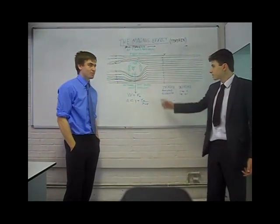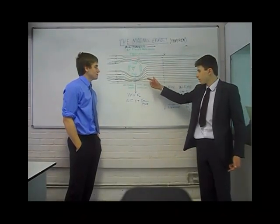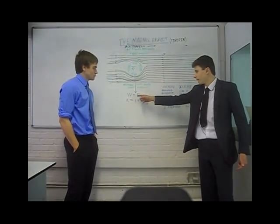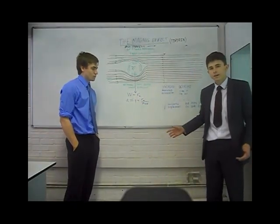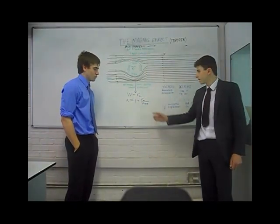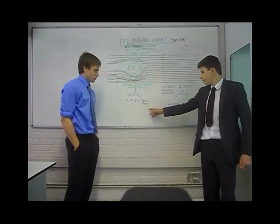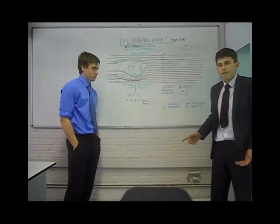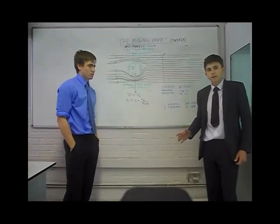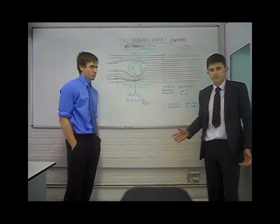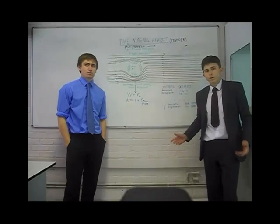The ball will go down the more top spin you put on the ball. This can be explained by the resulting force on the ball, which is equal to its weight plus the Magnus force. And so the acceleration downwards is G plus the Magnus force over the ball's mass. This causes the ball to accelerate downwards more quickly, and therefore the ball is more likely to drop in.